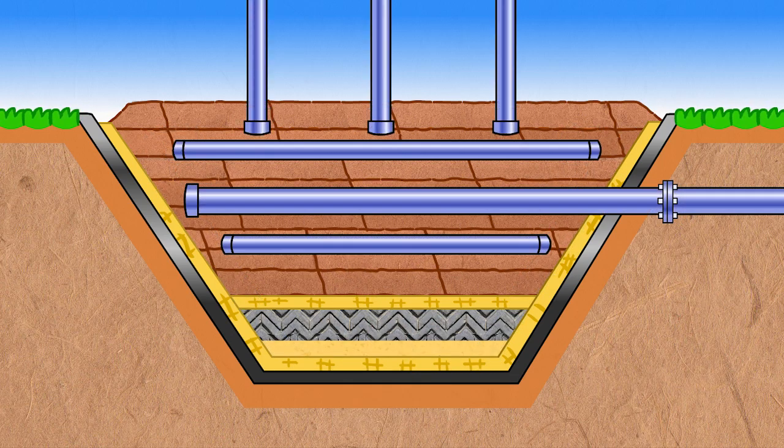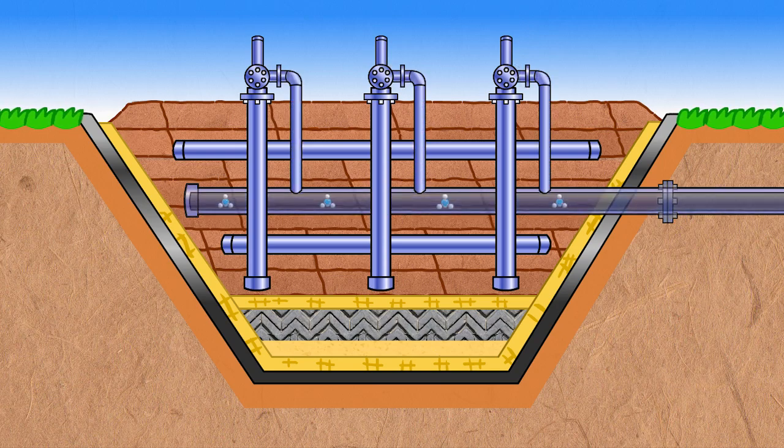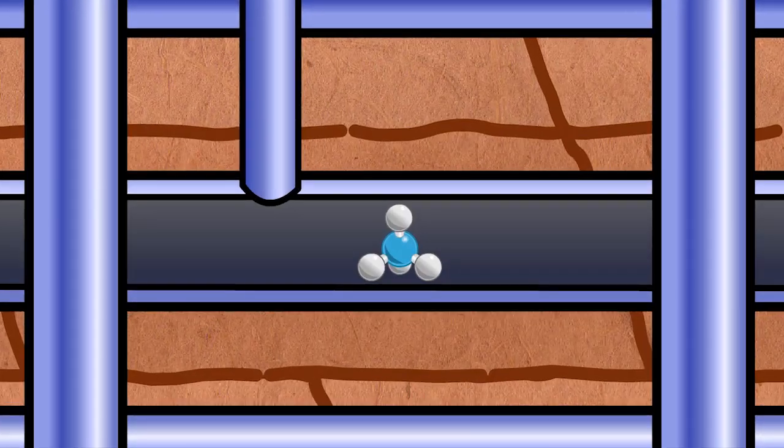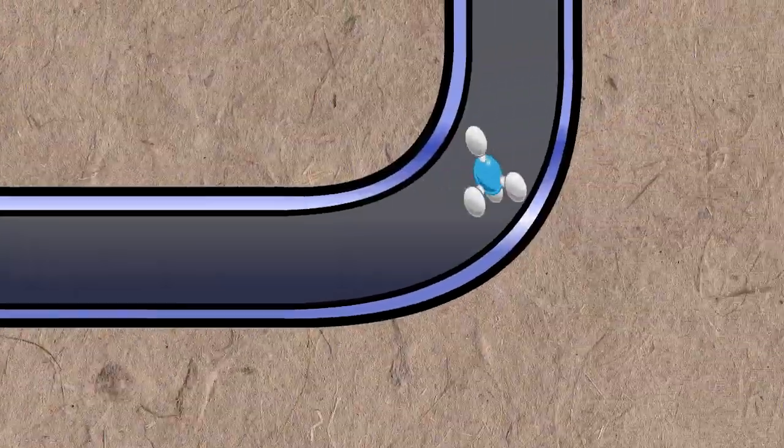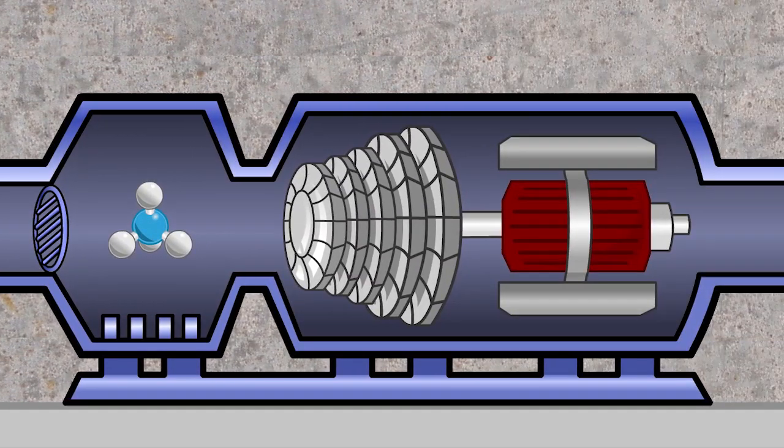Landfill gas created from decomposing waste will be collected through pipes drilled into or laid in the cells. Gas that is captured by the pipes is pumped to a generating station where all water is removed from the gas, and the gas, which is primarily methane, is burned.